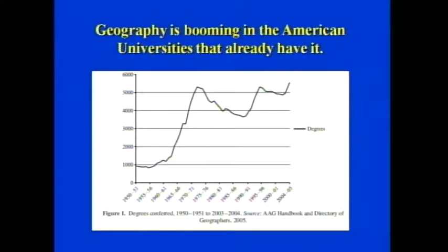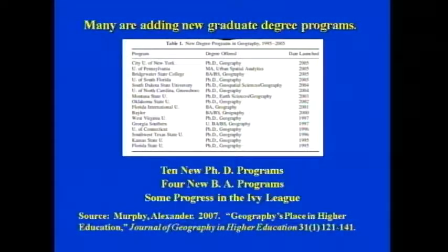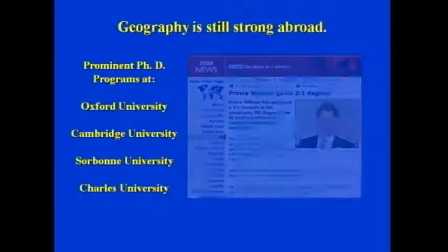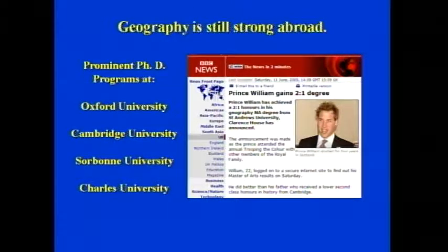The number of degrees conferred from 1950 to the present has actually been rising. Even though the number of departments was declining, the number of graduates was rising. Many of the departments that do exist are adding new graduate degree programs — there are 10 new Ph.D. programs. There are four new B.A. programs, and there's been some progress in the Ivy League. And geography is still prominent and strong abroad, with prominent Ph.D. programs at Oxford, Cambridge, the Sorbonne. Charles University in Prague has four geography departments. And Prince William, if you aren't impressed by Putin, got his bachelor's and master's degrees in geography with honors.